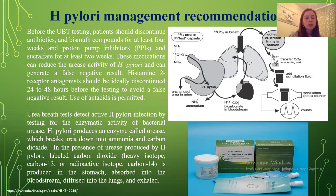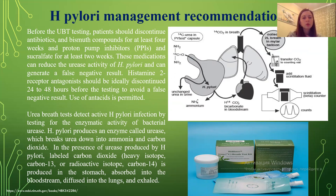The urea breath test detects active H. pylori infection by testing for enzymatic activity of bacterial urease. H. pylori produces an enzyme called urease which breaks urea down into ammonia and carbon dioxide. The carbon dioxide produced in the stomach is absorbed in the bloodstream, diffused into the lungs, and exhaled.